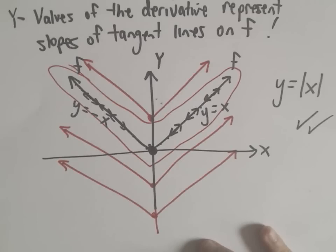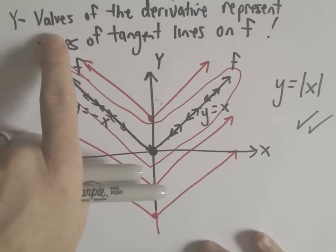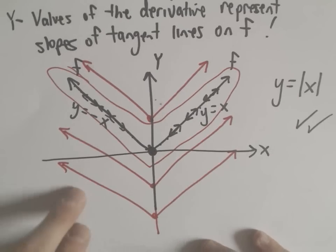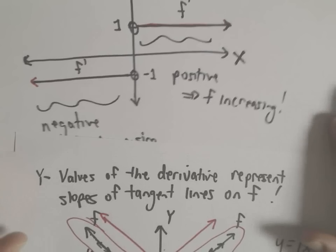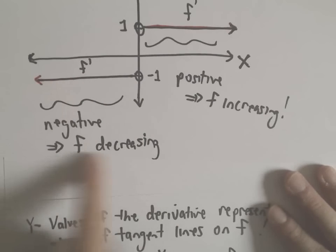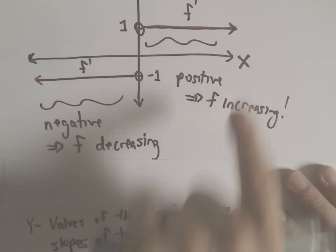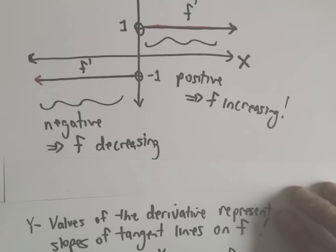I'll do another example in another video. The key things to remember: y-values of the derivative are slopes of tangent lines on the original function. Negative y-values on the derivative mean your original function is decreasing, and positive y-values on the derivative mean your original function is increasing. These guidelines will help you create a reasonable graph quickly.